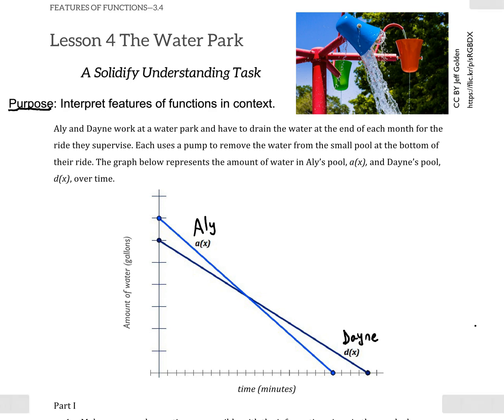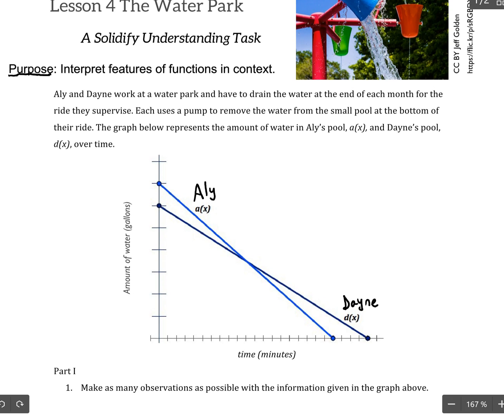Question one asks us to make as many observations as we can, and there's tons that you could make. Some of the most important ones you might want to notice is that Allie's pool drains faster, and similarly, Allie's pool is more full, or starts more full.